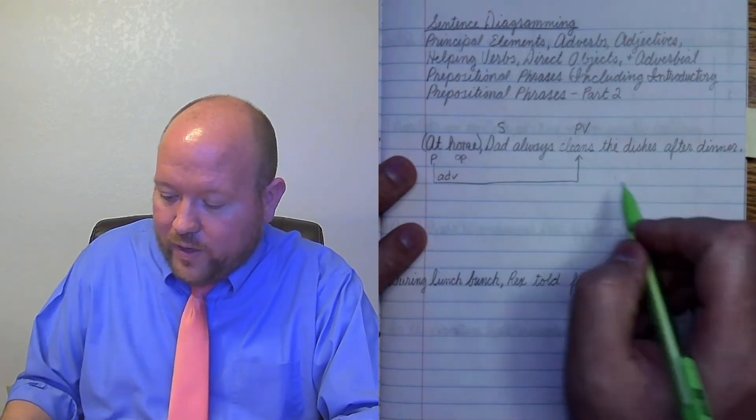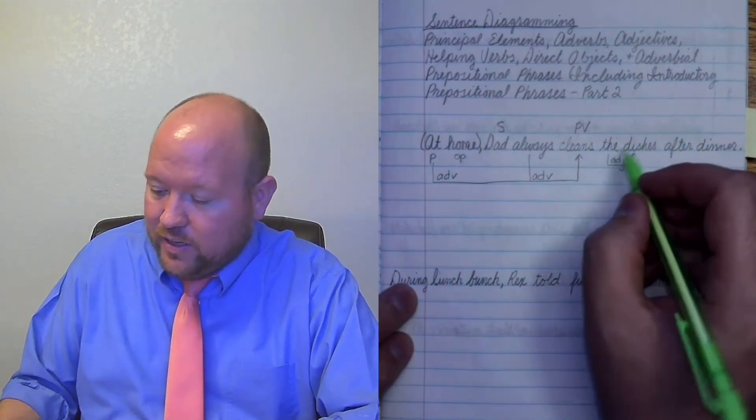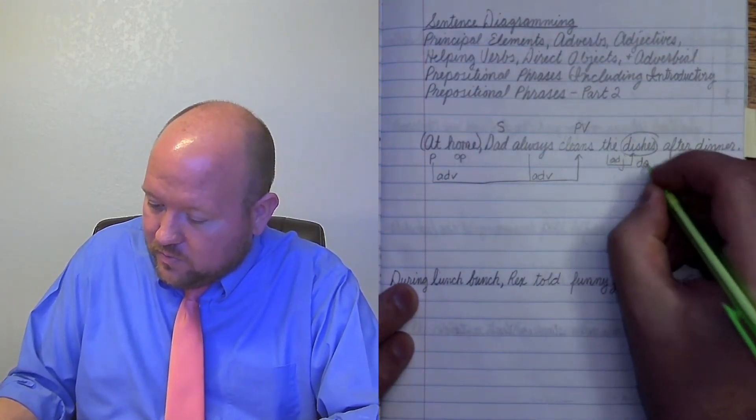Now at home, what kind of word is at home. This is a prepositional phrase. And so at is a preposition, home is the object of the preposition. Close that in. It's telling us where he does this. So I'm going to go over and up. So it's acting as an adverb. Always tells us how often. So this is also acting as an adverb. Next we have, the is modifying dishes. That's an adjective and dishes is what's receiving the action of the verb. It's what's being cleaned. So it is the direct object.